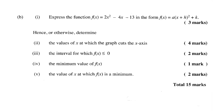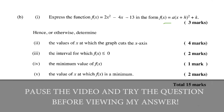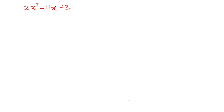Alright, so one more completing the square question before I cap out. Express the function f(x) = 2x² - 4x - 13 in completing the square form. Let's go to a clean page and do this. So that's the equation: 2x² - 4x - 13.